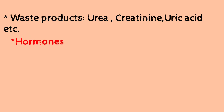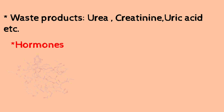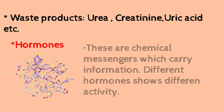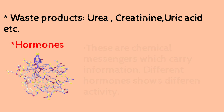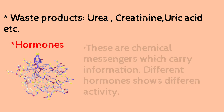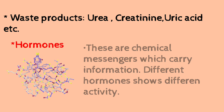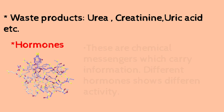Plasma also contains hormones. Hormones are chemical messengers. They carry messages, mainly from the endocrine system. These chemical messengers and their functions are also present in plasma.